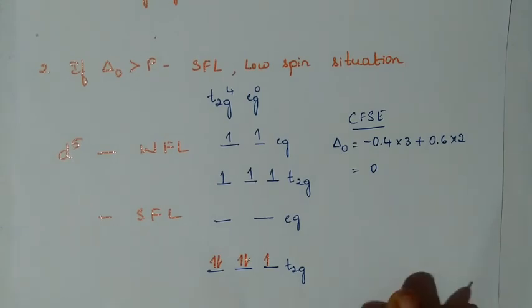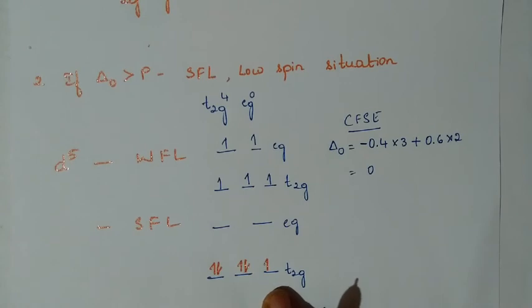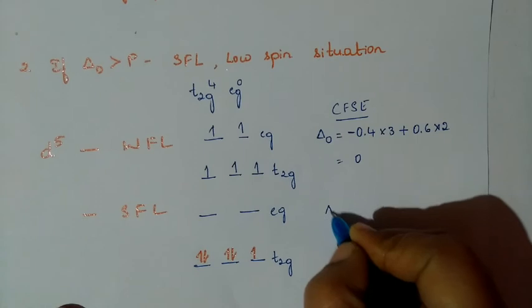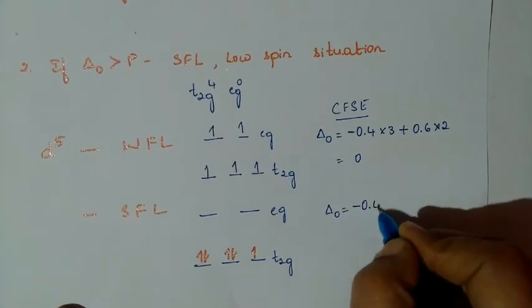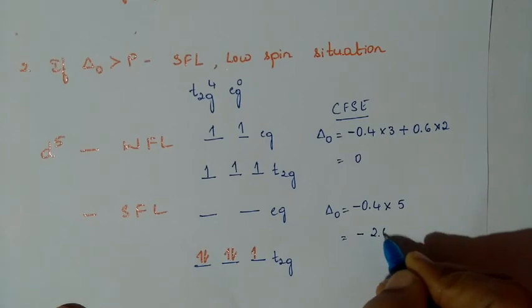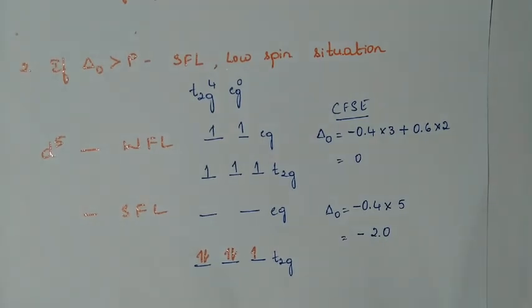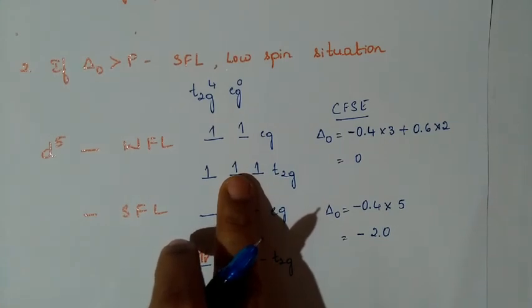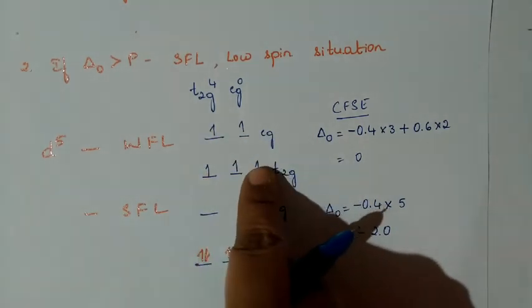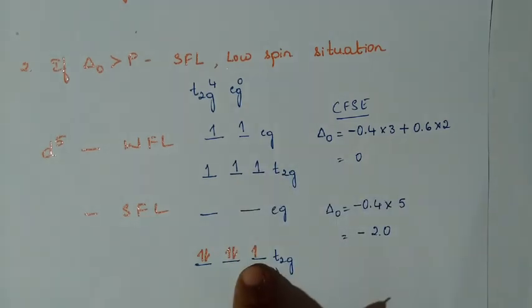We can also calculate the magnetic moment (spin-only). For the strong field D5 case, there is only 1 unpaired electron. The formula is μ = √(N(N+2)), where N is the number of unpaired electrons. For weak field D5, N = 5. For strong field D5, N = 1.